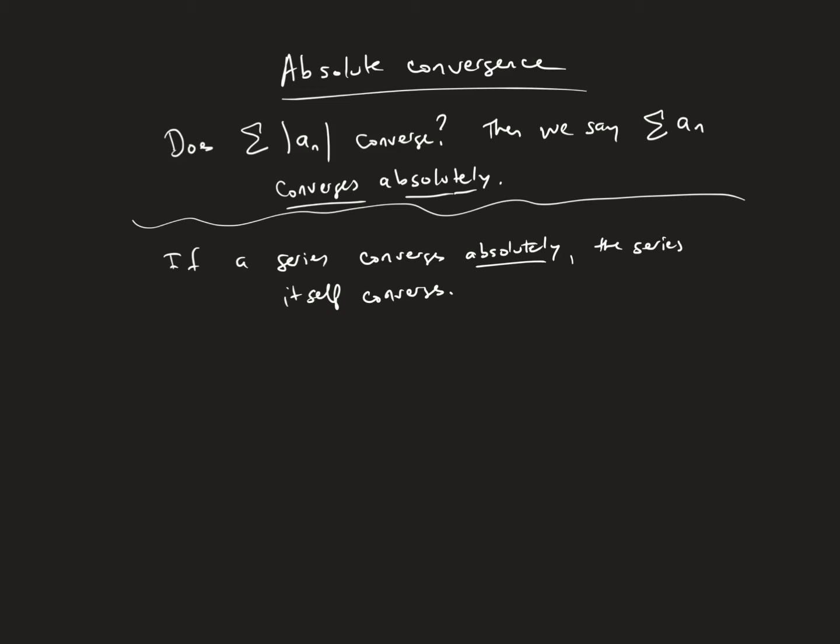In practice, this means we will often test for absolute convergence before we test a series for convergence itself. So I'm going to draw a little flowchart. This is going to talk about how we deal with absolute convergence. It's going to bring in a couple of other concepts when I do it.